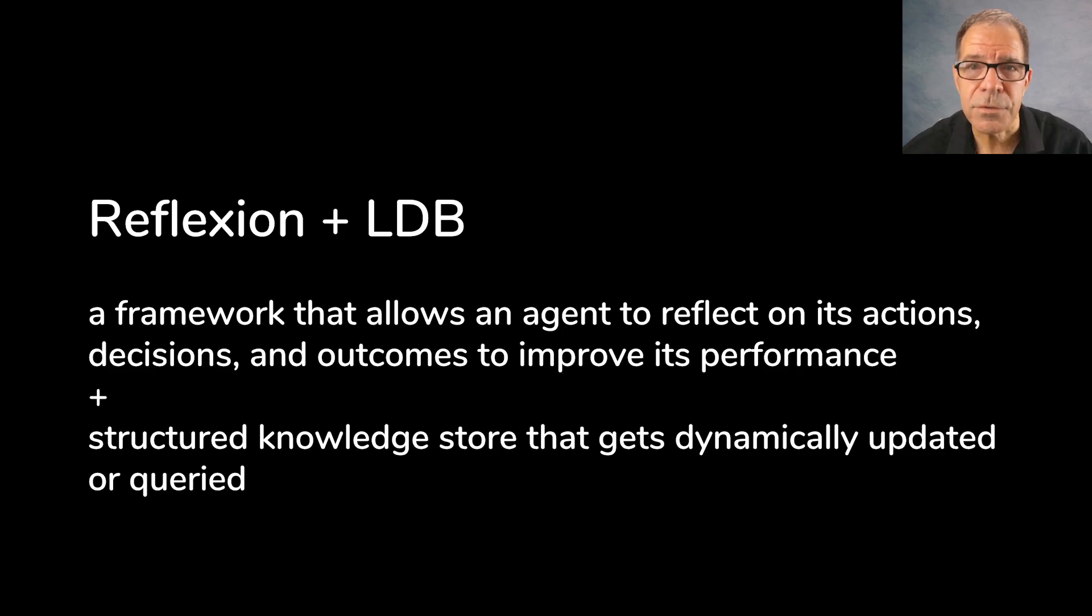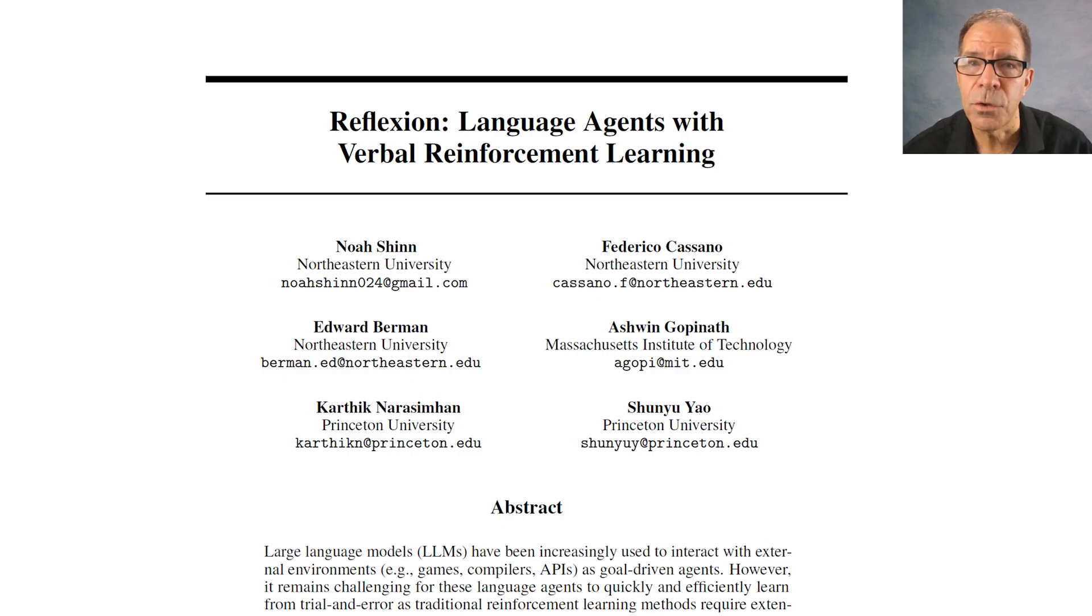Reflection is described in this paper by Noah Shin and his colleagues at Northeastern University, MIT, and Princeton. In essence, the approach they describe enables reinforcement learning for language agents by providing feedback in the form of words, including helpful context, rather than just a simple pass-fail result.